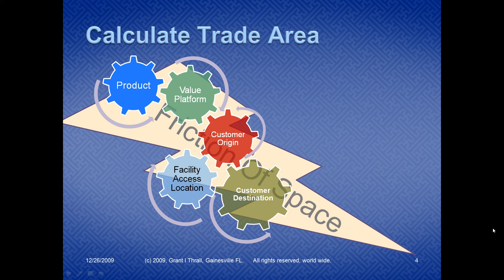Facility access location represents the concept that perhaps the facility you're going to could be brick and mortar, but the facility could also be your PDA or your computer — that is the access location, that is the storefront on your desk, or a brick and mortar store. And what is the ultimate customer destination? Location, or that place of employment, changes — the factory moves from one location to another.